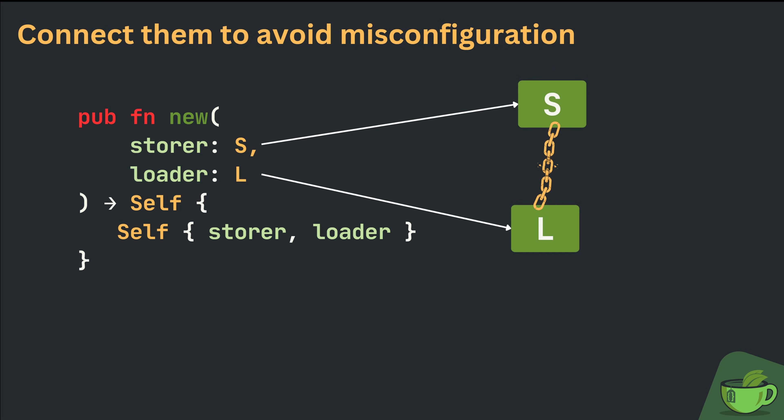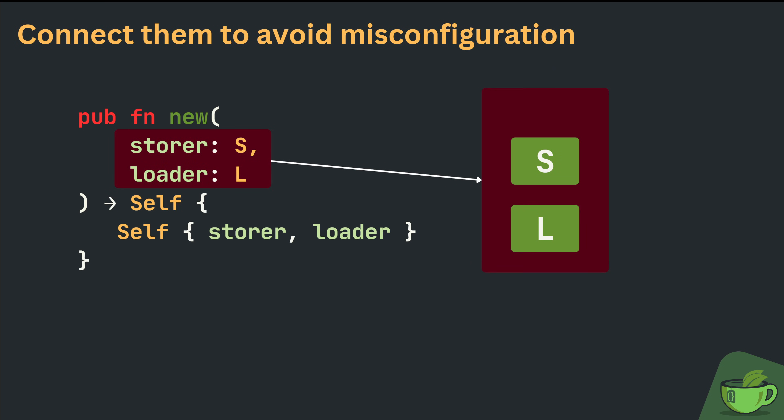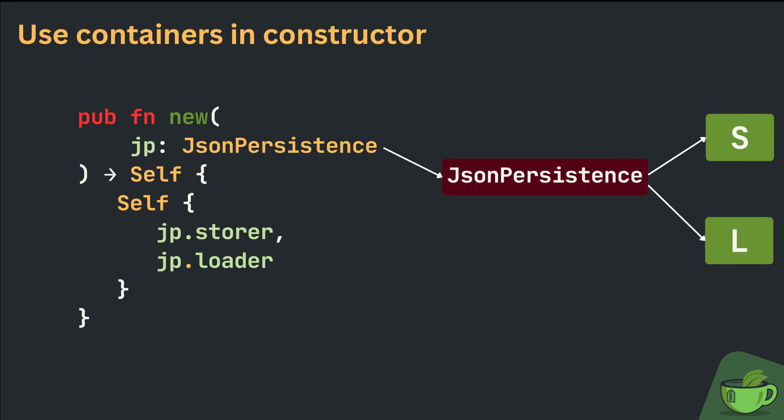What we want is to establish a connection between those two types such that only a consistent configuration is possible. One way to do this is by creating a container around the Storer and Loader and letting this container manage the types. We would then have to hand the whole container to our constructor to prohibit individual configuration of Storer and Loader. For example, a JSON persistent struct would hold a JSON Storer and a JSON Loader — a consistent configuration. But by handing concrete types to our constructor, we've set ourselves back to square one. The configuration is hardcoded once again.